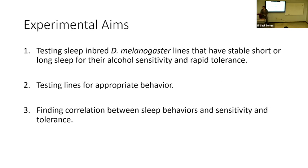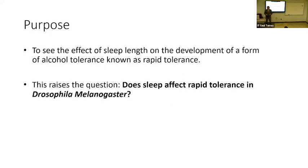We had three aims for this experiment. We wanted to test fly lines selected for long sleep and short sleep for alcohol tolerance and alcohol sensitivity. On top of that, we wanted to test them for their appropriate behavior. Additionally, we wanted to find a correlation between those sleep behaviors as well as sensitivity and tolerance. Our purpose was to see the effects of sleep length on the development of rapid tolerance, which led us to the question: does sleep affect rapid tolerance in Drosophila melanogaster?